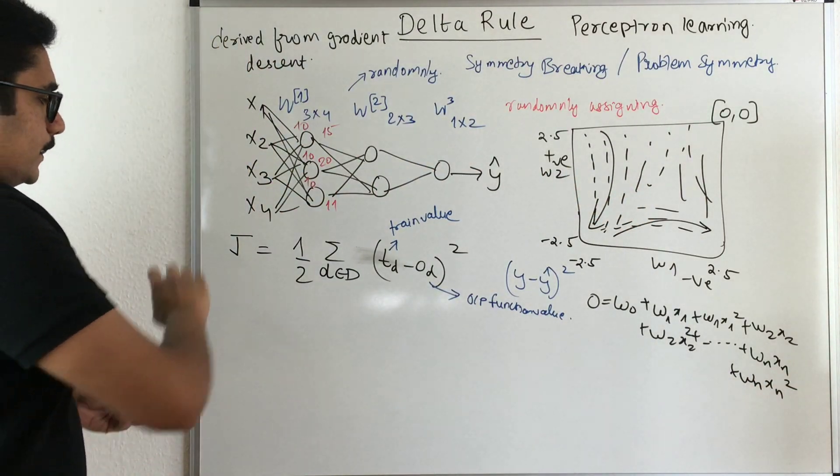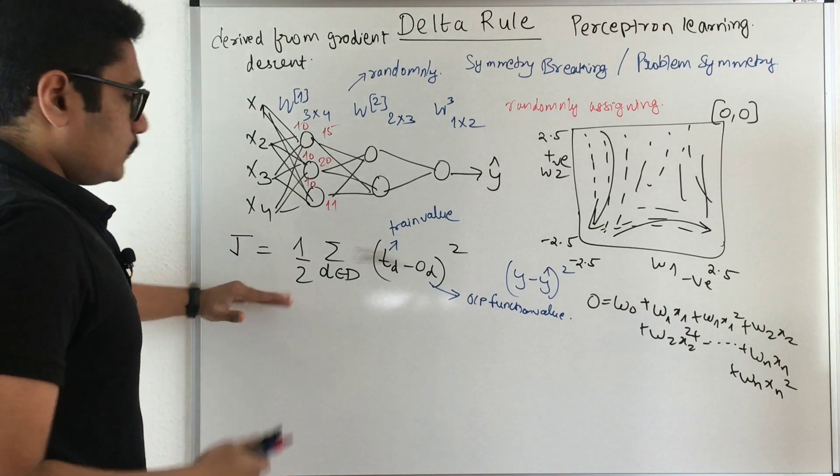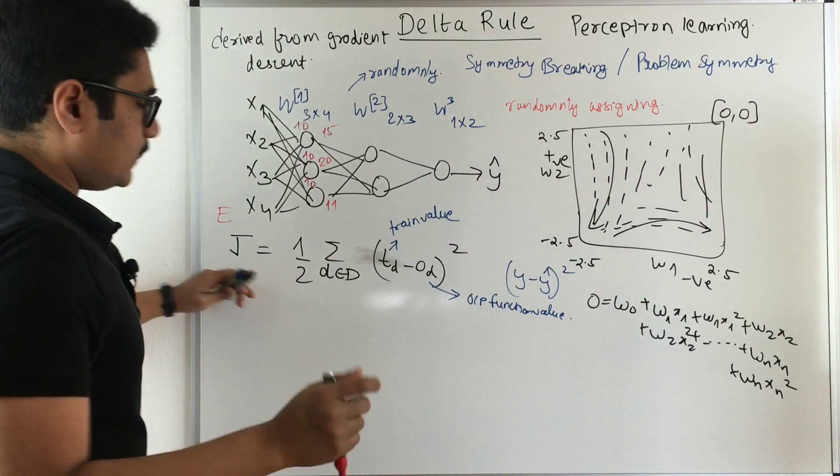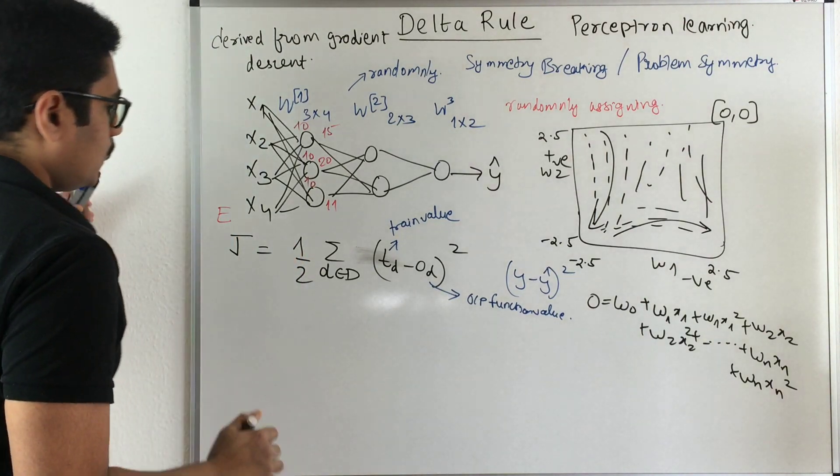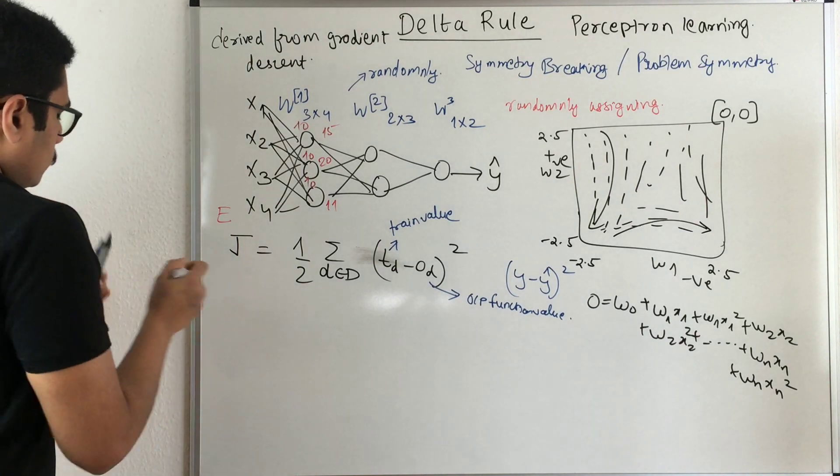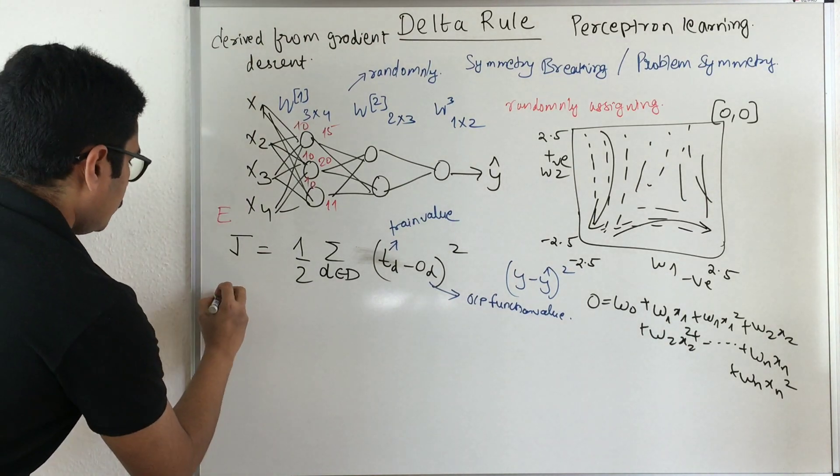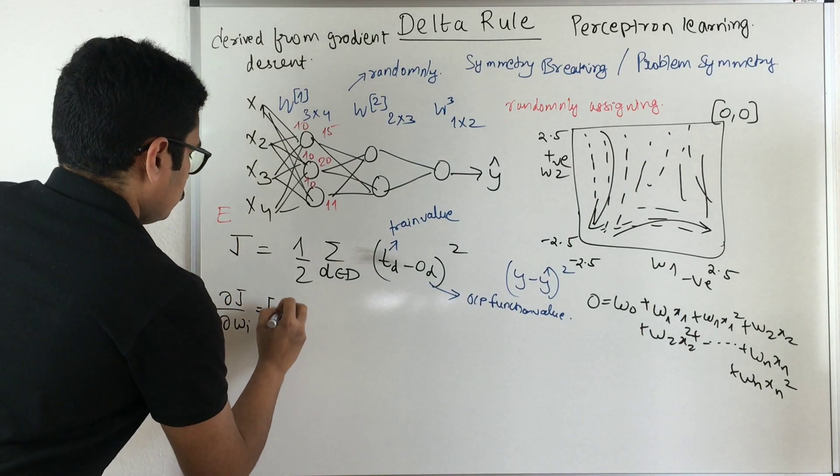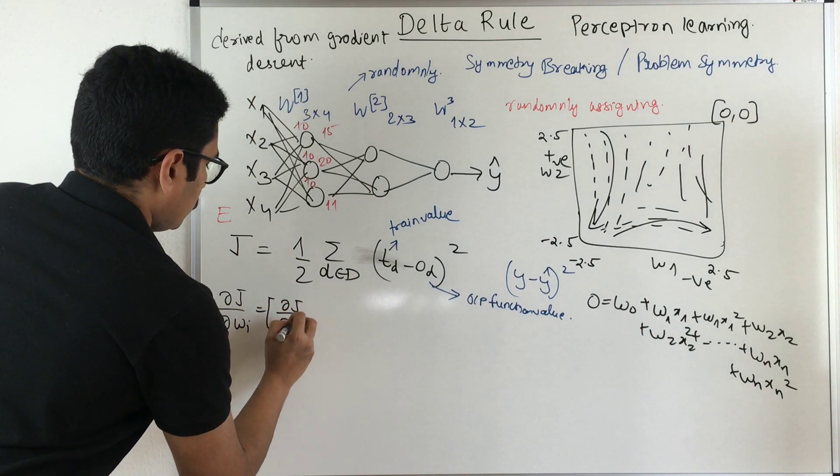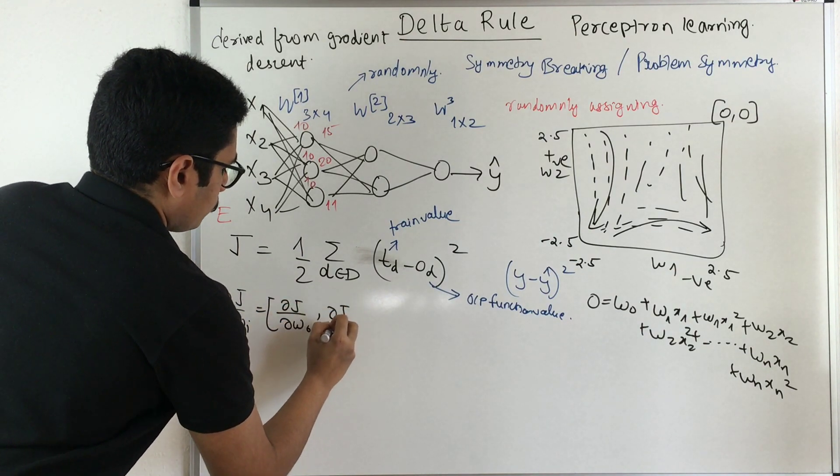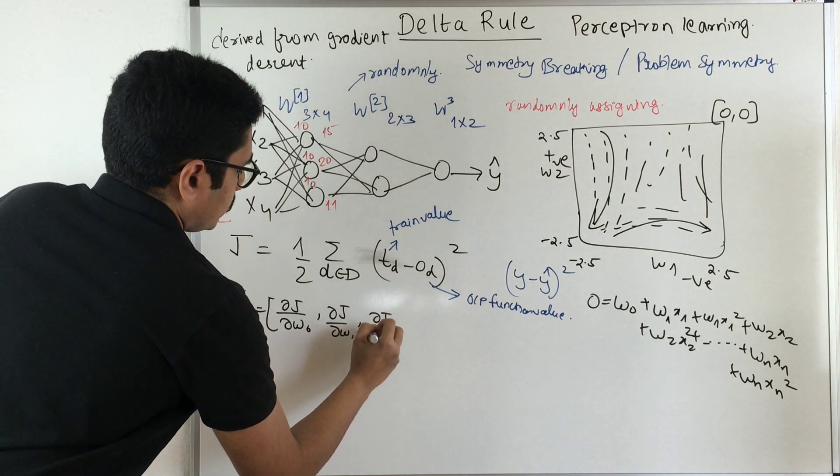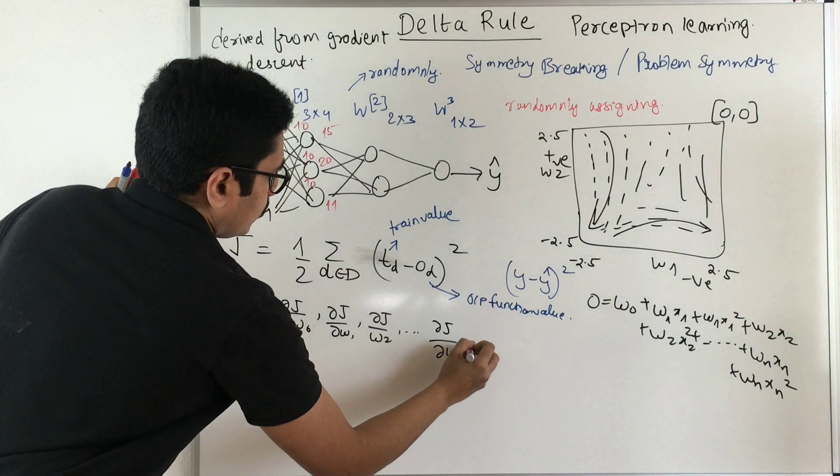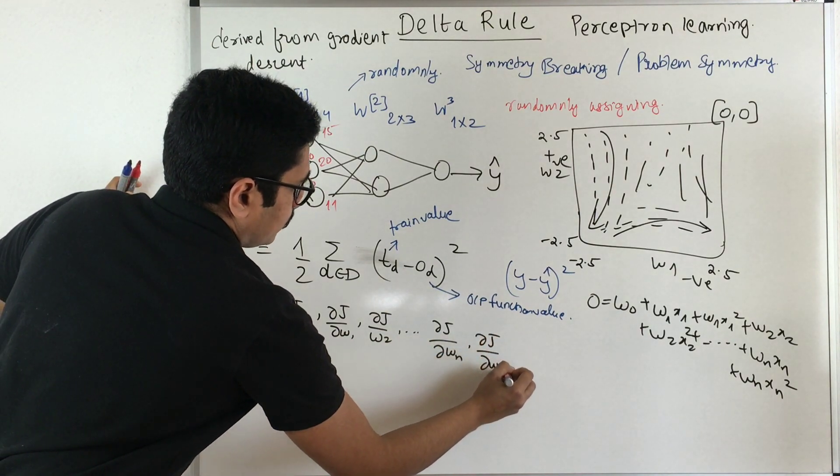So what we need to do is we need to differentiate this error function. Error somewhere is also represented as E so we'll just go with only one notation that is we'll stick to J, that is for Jacobian. We'll not change this each and every time. So what we need to do is we need to differentiate this J with respect to each and individual weights. So if you just represent this, that is with respect to W0, with respect to W1, with respect to W2 and so on up till same with respect to WN and del J with respect to WN plus one.